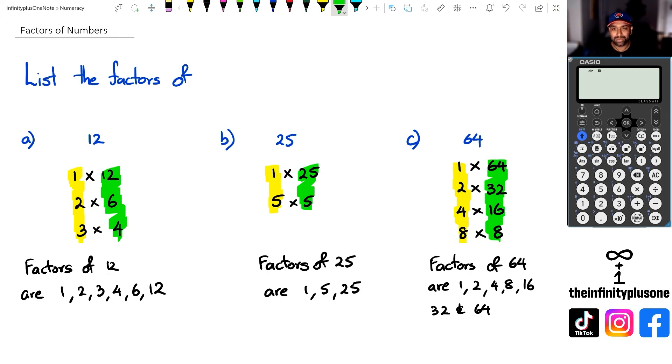And eventually what happens is that you're going to come to a point where the numbers are kind of similar to each other, like number 12. And that's when you know you've figured out all the factors for that particular number. That is just a quick little example of how to find factors for any given numbers.